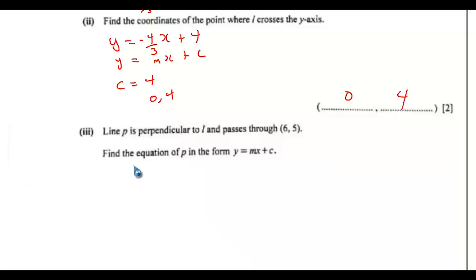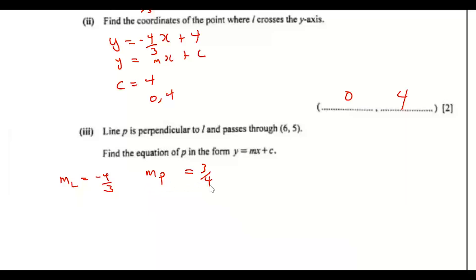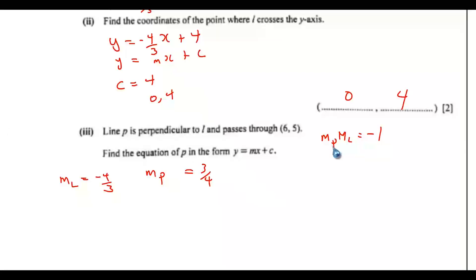Part iii: line P is perpendicular to L. The gradient of line L is negative 4 over 3. Since they are perpendicular, the product of their gradients equals negative 1, so the gradient of P equals 3 over 4.